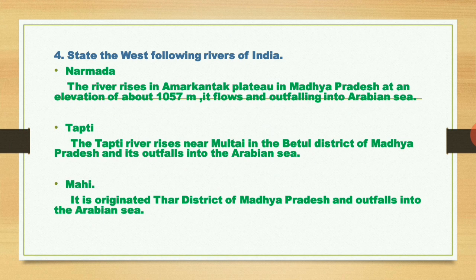The Mahi river originates in the third district of Madhya Pradesh and falls into the Arabian Sea. These three rivers flow towards the west and join the Arabian Sea.